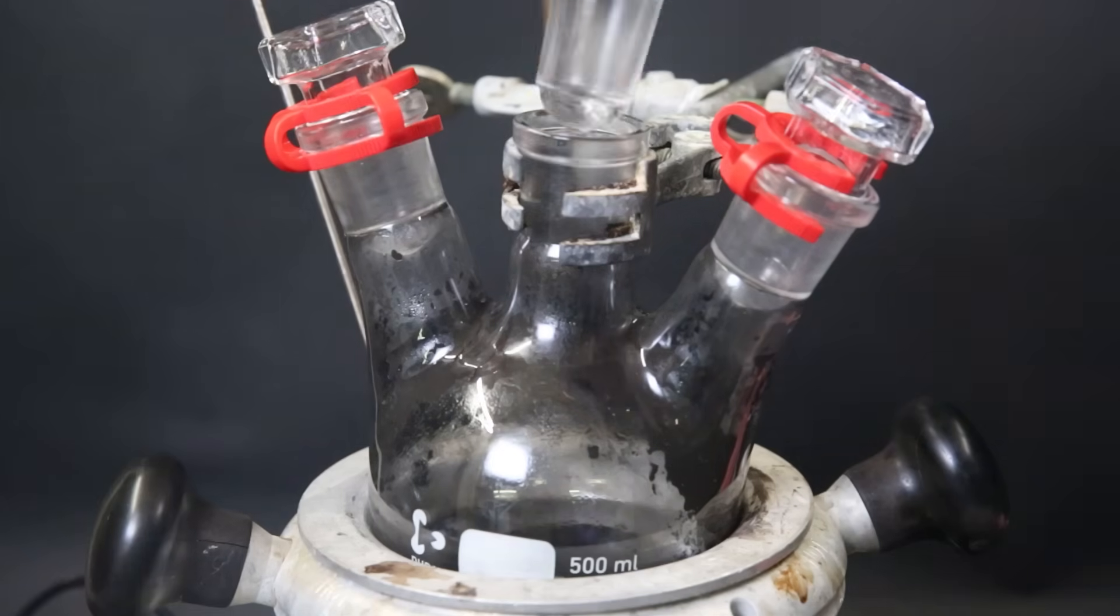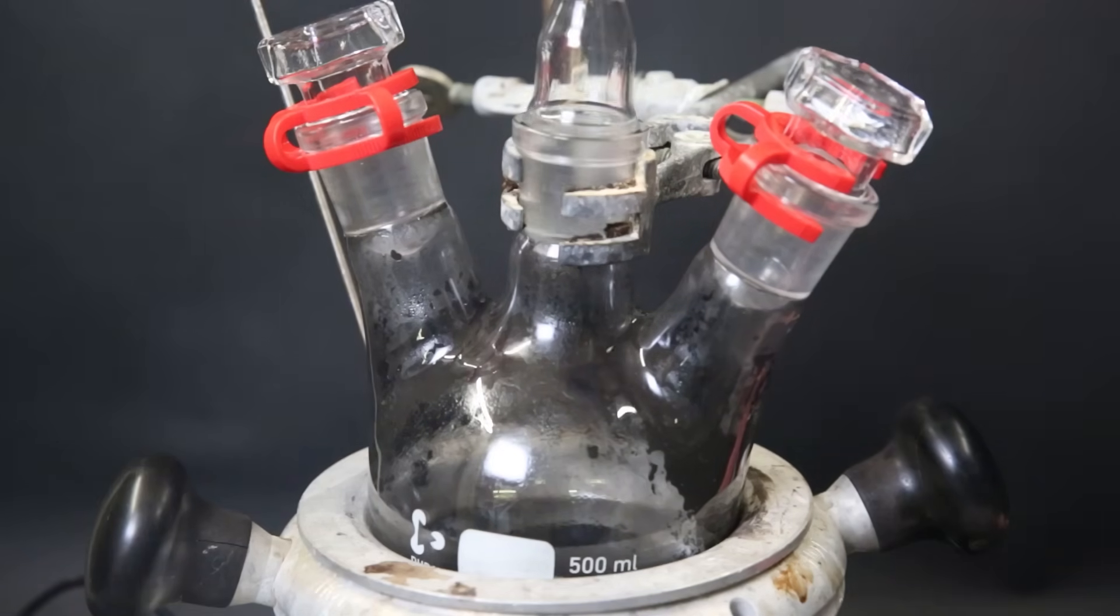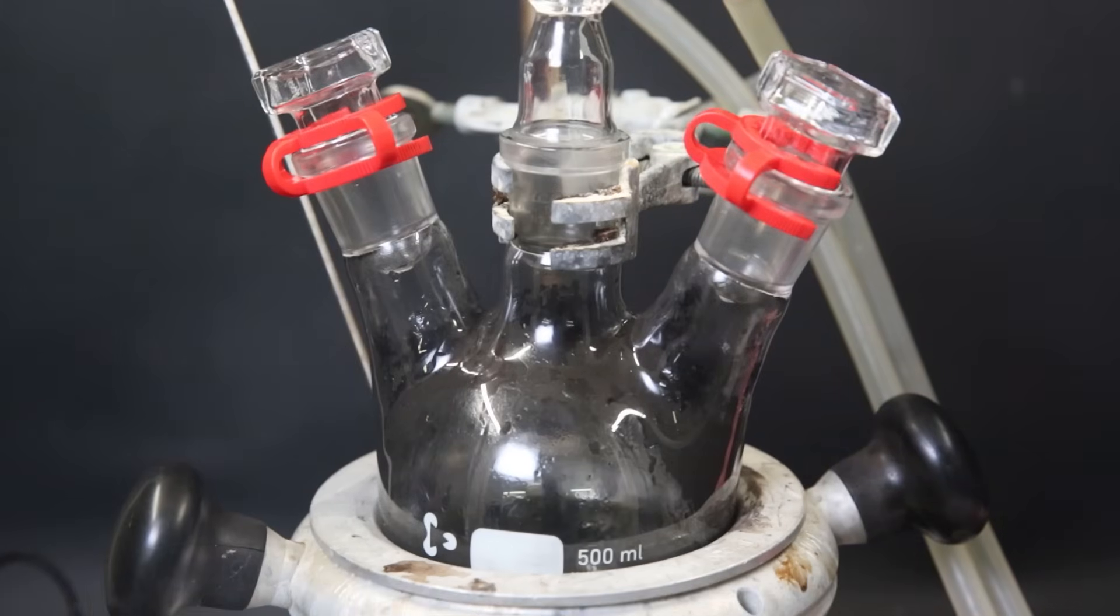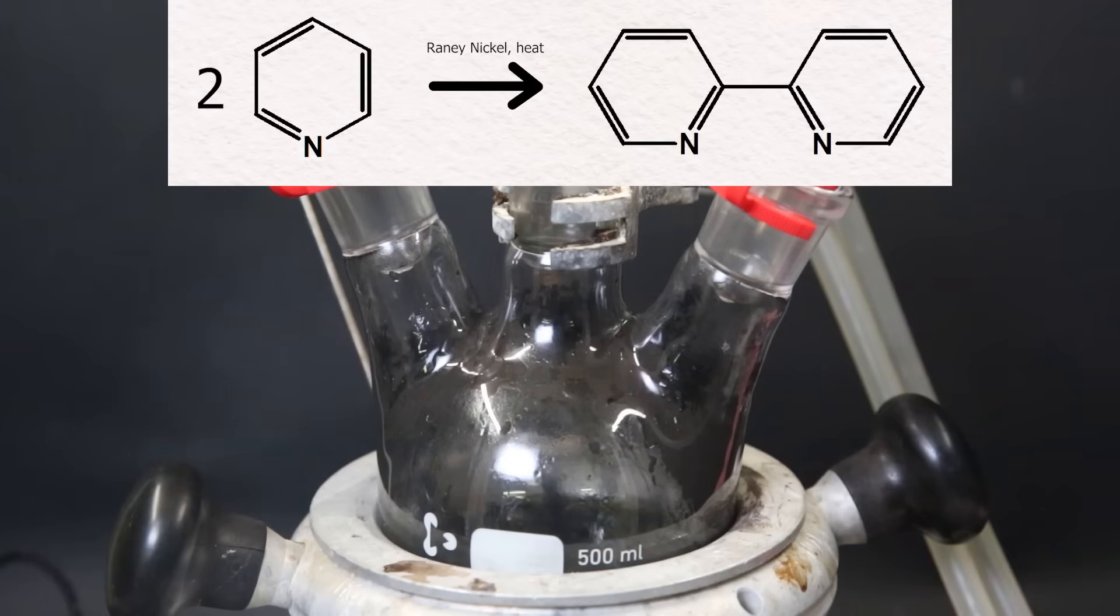So I remove the middle stopper and replace it with a condenser. I then heat the pyridine to a boil. I leave the mixture to reflux for 48 hours. During this reaction, the Raney nickel will steal one hydrogen from each pyridine molecule, which will lead to the pyridines forming a bond between them. And so we end up with bipyridine.